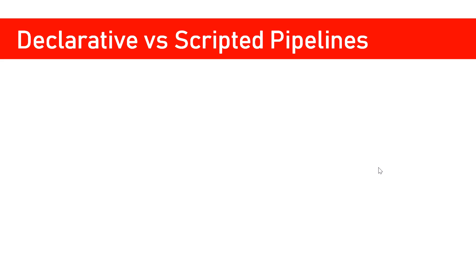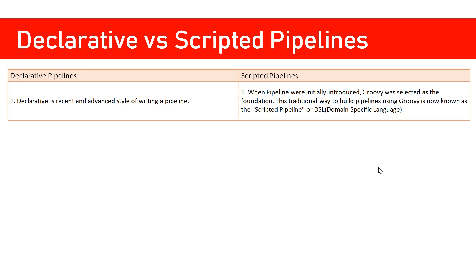In Jenkins, we can write pipelines in two ways. One is declarative syntax, which is the new style of writing Jenkins pipelines, and the other is the old one, which we call scripted pipelines. The declarative one is the most recent type of syntax, while the scripted one is based on DSL — domain-specific language — and its foundation was built on Groovy, which is why scripted pipelines consist of Groovy syntaxes.